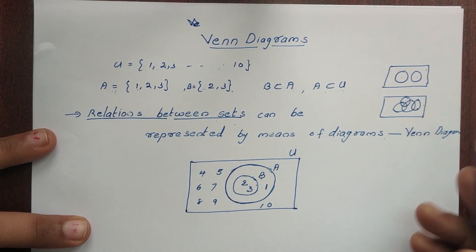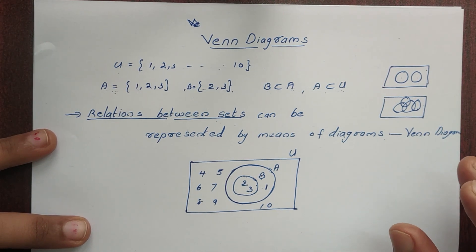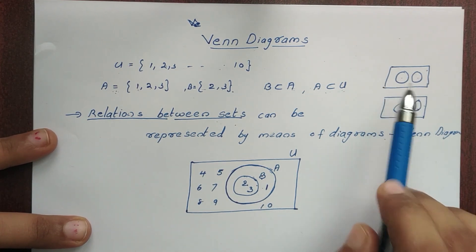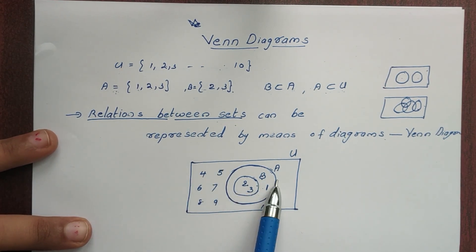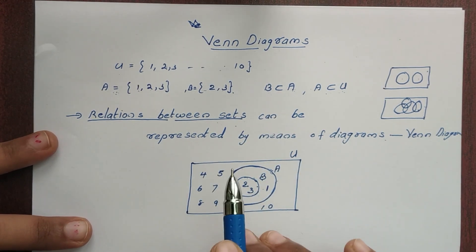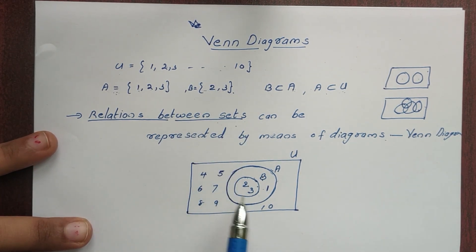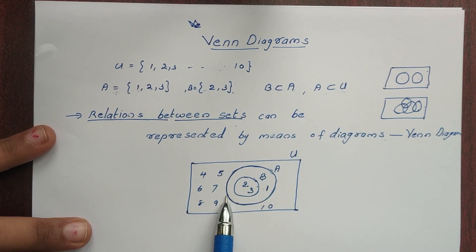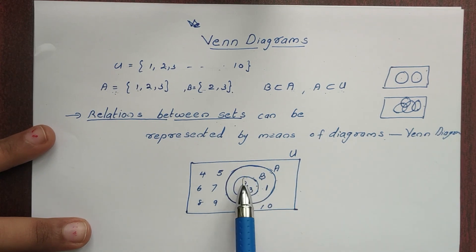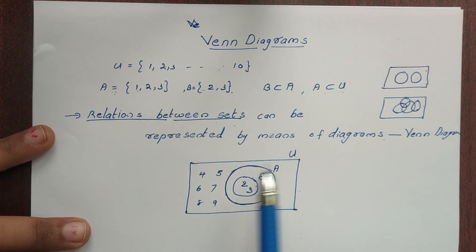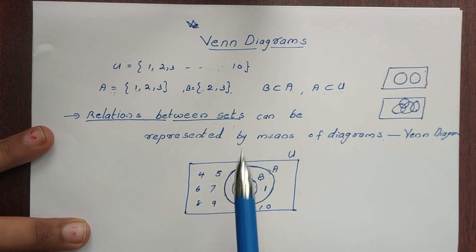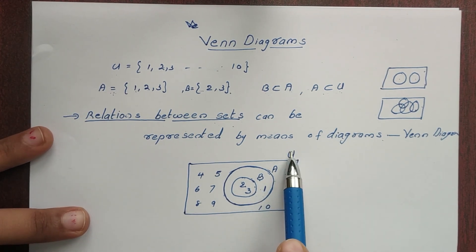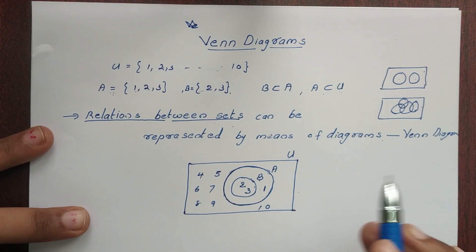Now, we will learn how to denote a subset using this overlap. If you are going to study the operations on set, we will represent this diagram. This is the representation — we use the Venn Diagram. Venn Diagram is the way to find the relations between sets. We have a rectangle and a circle. All the sets are a subset of the universe.